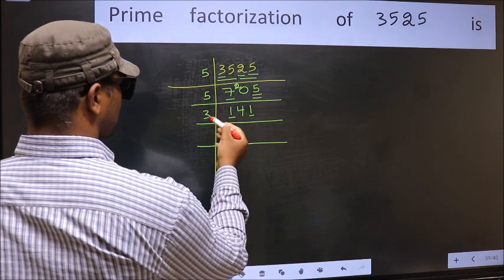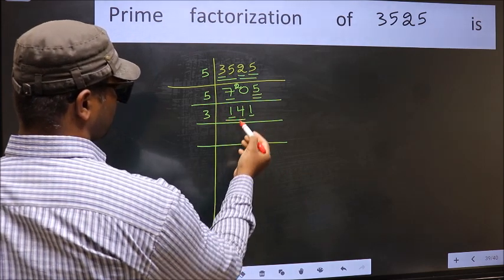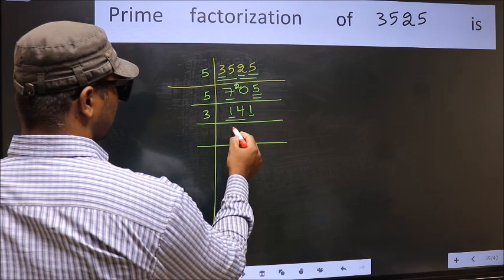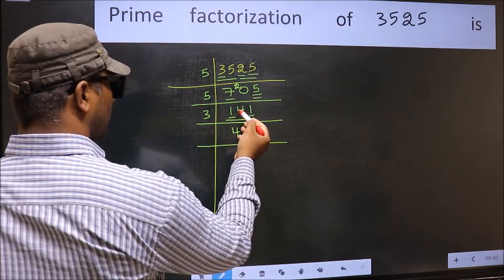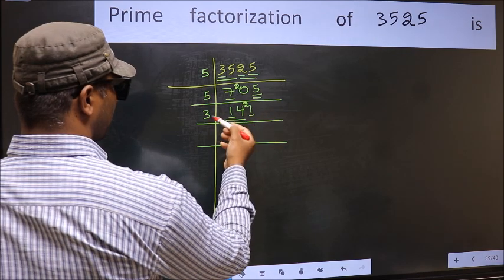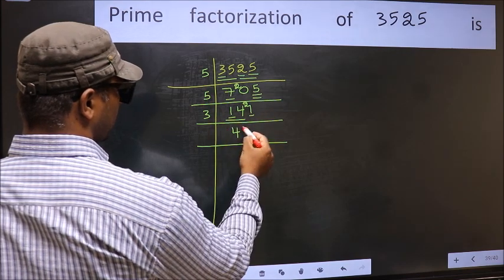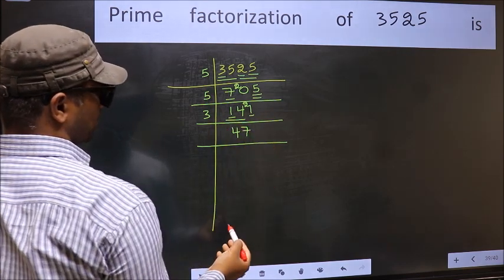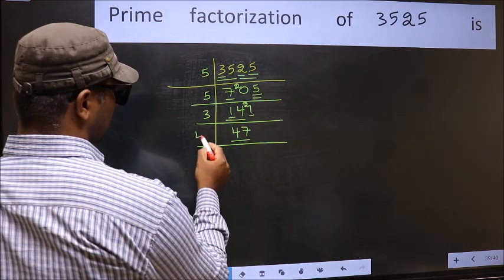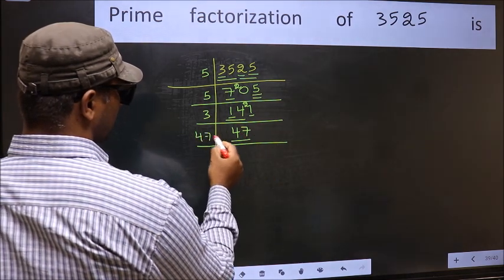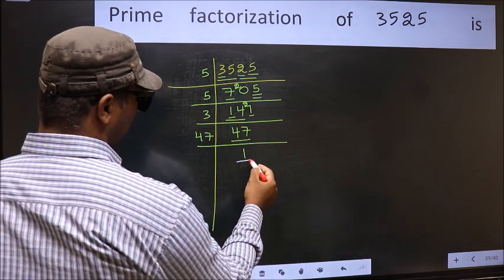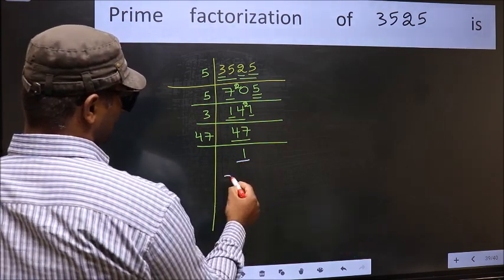First number is 1, smaller than 3, so take 2 numbers: 14. A number close to 14 in the 3 table is 3 times 4 equals 12. 14 minus 12 is 2, carried forward. 21 — when do we get 21 in the 3 table? 3 times 7 is 21. Now here we have 47. 47 is a prime number, so 47 times 1 is 47, and we get 1 here.